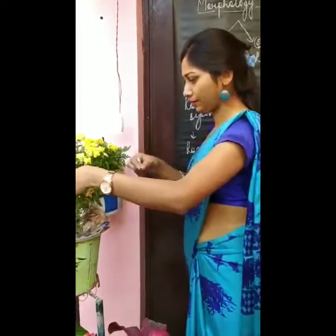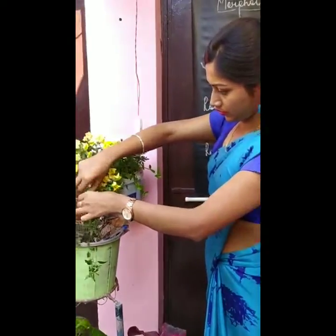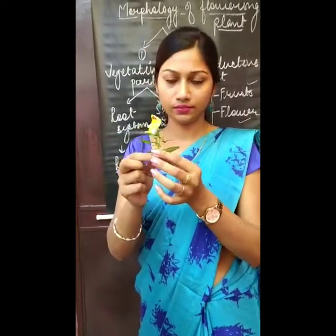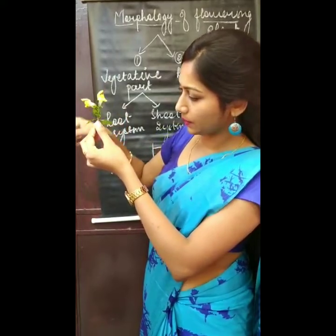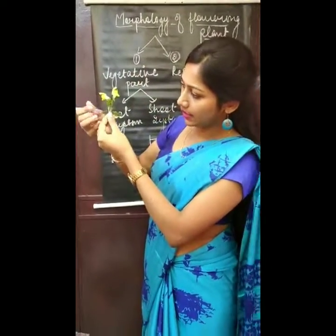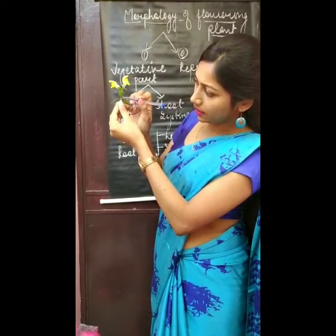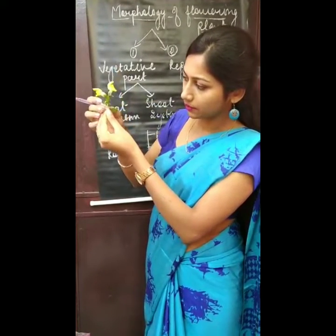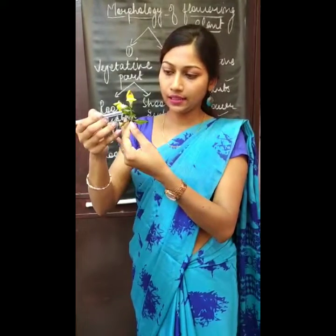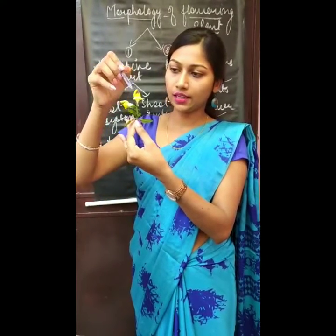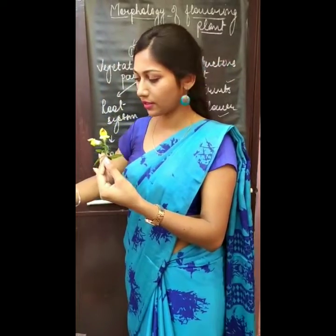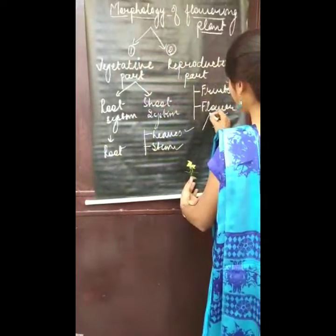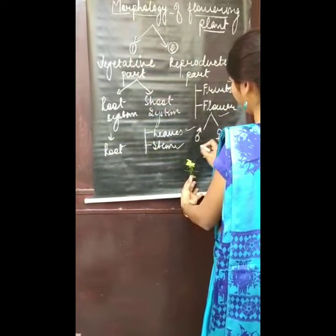I have taken a flower for you. This full structure is called a twig, and this twig comprises the leaves. Here you can see the leaves. This is the stem. This is the flower. We can see that this is the vegetative part and this is the flowering part. This flowering part comprises two main flowers — a male flower and a female flower.